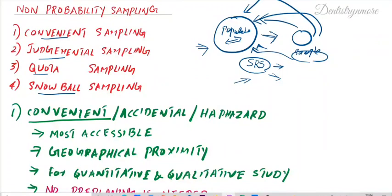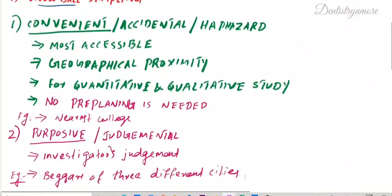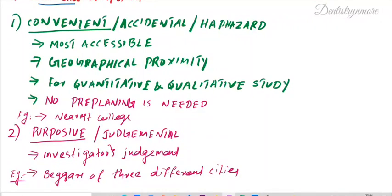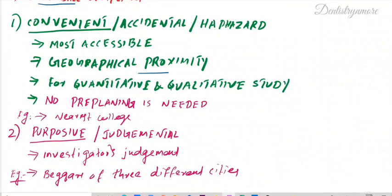The first type is convenient sampling, also known as accidental or haphazard sampling. It is a non-probability sampling where members of the target population are selected based on practical criteria such as ease of accessibility, geographical proximity, availability at a given time, or willingness to participate. It refers to research subjects that are easily accessible to the researcher.